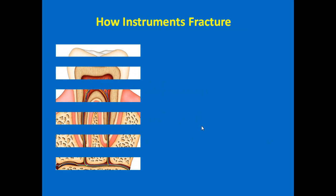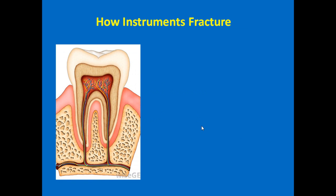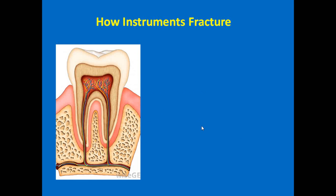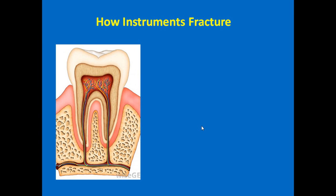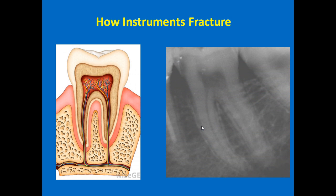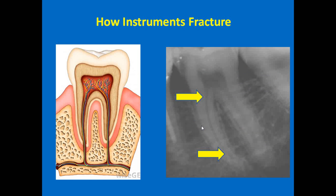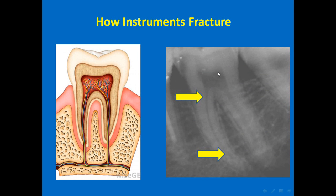How do instruments fracture? In straight canals we don't have a problem with fracture because there is no exertion of a lot of stress on the file. But in curved canals, especially in double-curved areas, there will be a possibility of separation because there will be a lot of stress in these curved areas, and separation usually happens in the apical area.